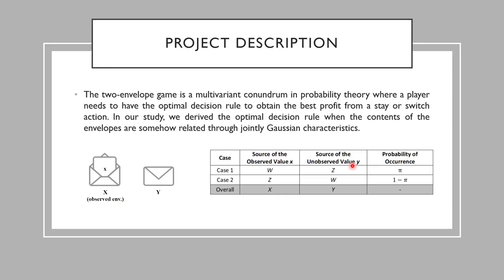If you decide to switch, you cannot go back to your first observation. At the end, if you have a positive value, I am going to give you the value as money. For example, if you ended up with 10, I am going to give you 10 dollars. And if you ended up with a negative value such as minus 5, you need to pay 5 dollars to me.